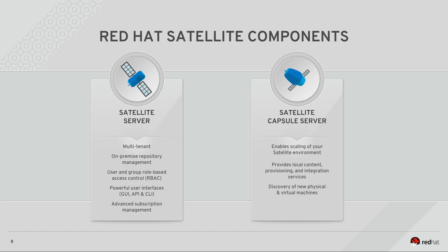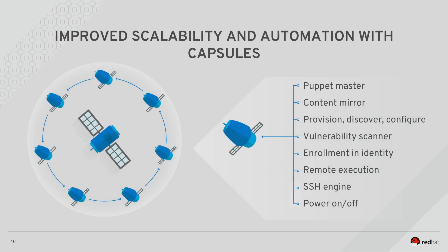There are two primary components for Satellite that you need to be aware of when you're planning a deployment. The Satellite server synchronizes the content from the Red Hat customer portal and provides lifecycle management, role-based access control, GUI, CLI, API access, and integrated subscription management. The Satellite capsule server mirrors content from the Satellite server, helping you facilitate content federation across geographical locations, so host systems can pull content from the local geolocated capsule server instead of from the Satellite server. Many things done by the Satellite server can also be done with the capsule. The important thing to note is that the capsules help your Satellite environment scale — as you continue to add capsule servers in geographical locations, your Satellite can handle more and more hosts without your services being impacted.